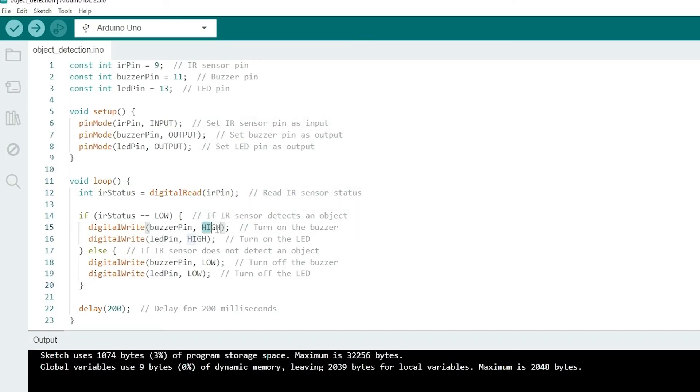Let's see how the small change in coding can give us the solution. As you know, high means on and low means off. So whenever IR detects an object, buzzer should be high. And make LED low here. Make LED high here. Upload the code. And let's see the output.